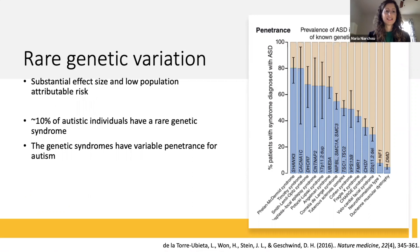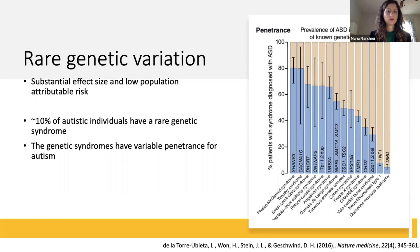Rare genetic variants confer significant risk in the complex etiology of autism. They are typically non-Mendelian with substantial effect sizes and low population attributable risk. It is estimated that about 10% of individuals with autism have been diagnosed with an identifiable rare genetic syndrome. As you can see in the graph, the prevalence of autism in associated syndromes varies widely, with the x-axis showing the rare genetic syndromes and the y-axis showing the percentage of patients with a syndrome that are diagnosed with autism.